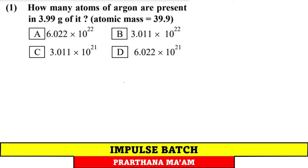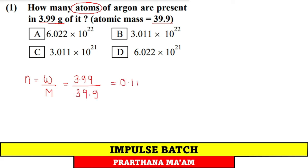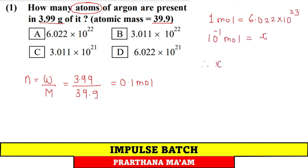Question 1: How many atoms of argon are present in 3.99 gram of it? Given mass is 3.99 g, molar mass is 39.9 g/mol. Number of moles = given mass / molar mass = 3.99 / 39.9 = 0.1 mol. Number of atoms = 0.1 × 6.022 × 10²³ = 6.022 × 10²². Option A.